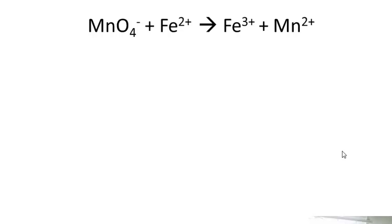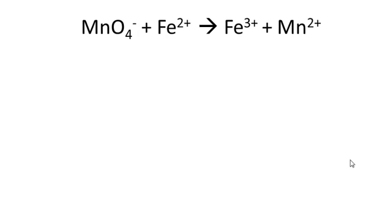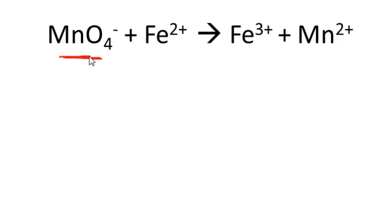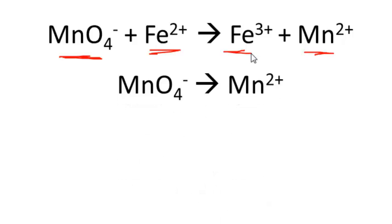The reaction we're working with is potassium permanganate reacting with an iron-2 solution: iron-2 changes to iron-3, and permanganate changes to Mn²⁺. Step one is to split it into two half-reactions: permanganate going to Mn²⁺ is one half-reaction, and Fe²⁺ going to Fe³⁺ is the other.